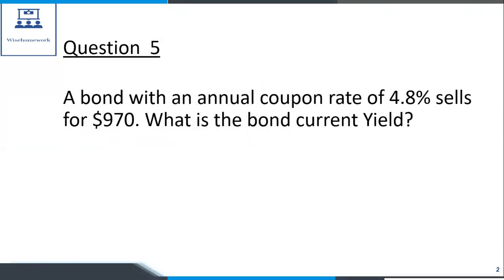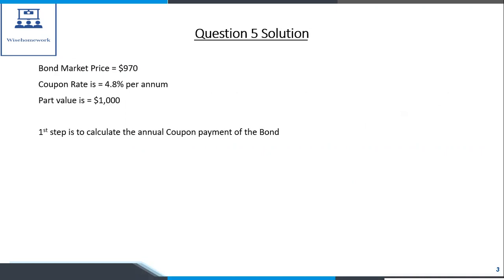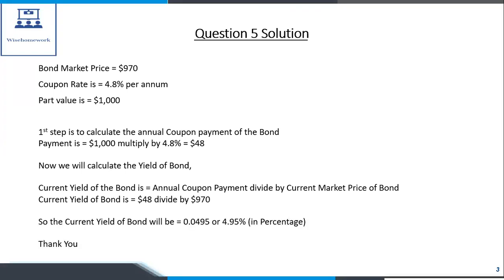A bond with an annual coupon rate of 4.8% sells for $970. What is the bond current yield? Solution: bond market price equals $970, coupon rate equals 4.8% per annum, par value equals $1,000.